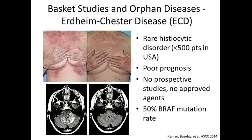I like pointing out one Erdheim-Chester case — a woman who actually presented in a wheelchair with cerebellar infiltration of the disease. She went on the trial and has had a complete response, been on about a couple of years. Related to reimbursement issues — we actually tried to bill for this BRAF testing in this woman. It got rejected by the insurance company because they said it's not standard of care. That really is the dilemma: you've got these types of responses, you need to find these patients, but how do you find them if you can't bill for the testing?